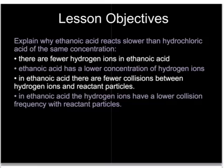We may have two acids of the same concentration — both, for example, 0.1 moles per cubic decimetre — one a strong acid like hydrochloric, one a weak acid like ethanoic. But the same concentration doesn't mean they react in the same way. The speed of reaction with something like magnesium or marble chips depends on the concentration of hydrogen ions in solution, not the concentration of the original acid. So weak acids will generally react much more slowly than strong acids of the same concentration.